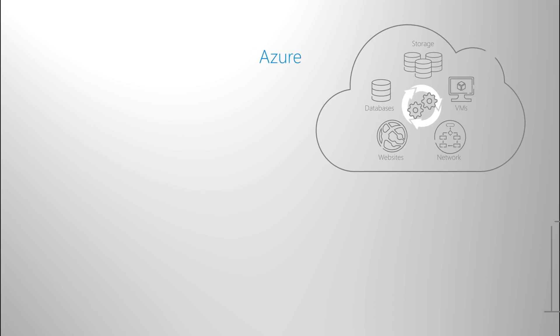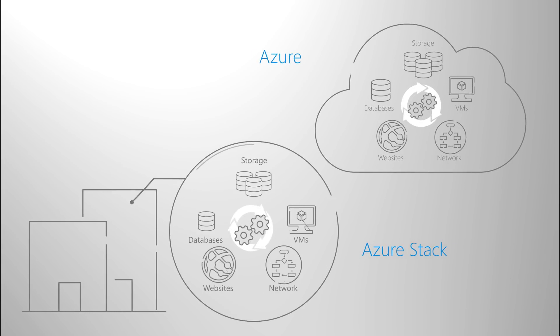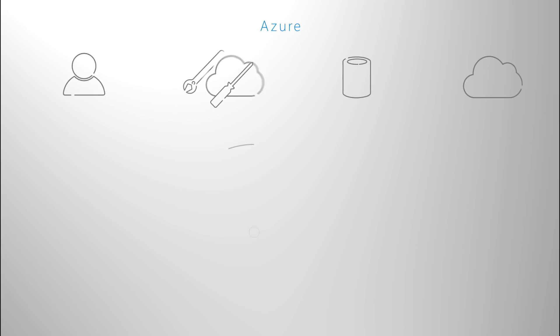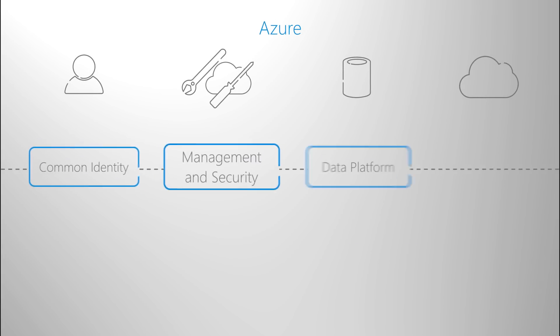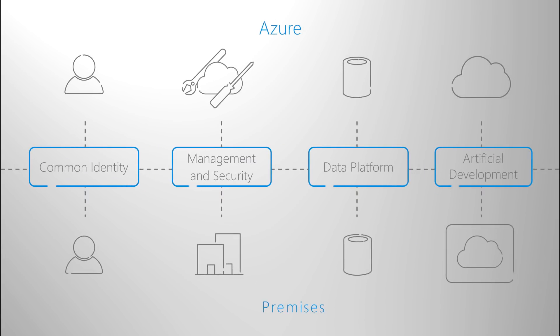Imagine being able to run AWS services in your data center. With Azure, you can deploy Azure services in your data center using Azure Stack. Azure also supports first-party hybrid integration between your cloud and on-premises solutions.